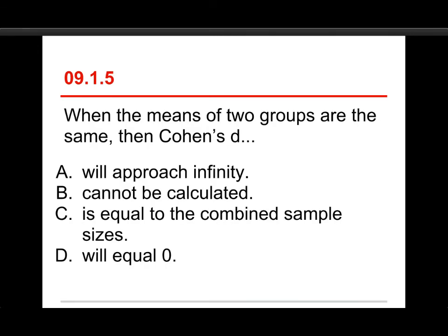Okay, number five, when the means of two groups are the same, then Cohen's d, A, will approach infinity, or B cannot be calculated, or C is equal to the combined sample sizes, or D will equal zero. The answer here is D, Cohen's d, when the two means are the same, will equal zero.